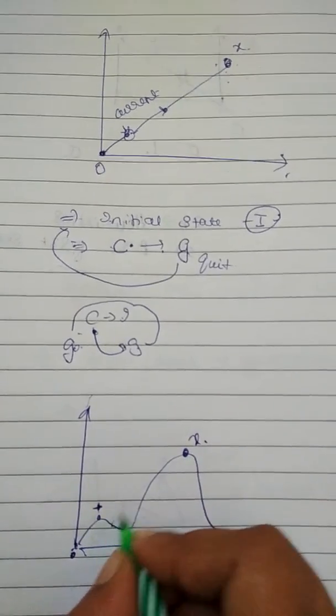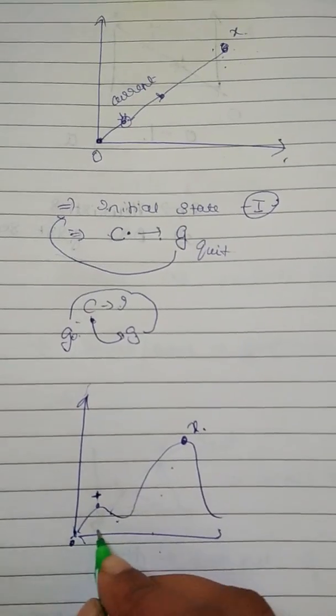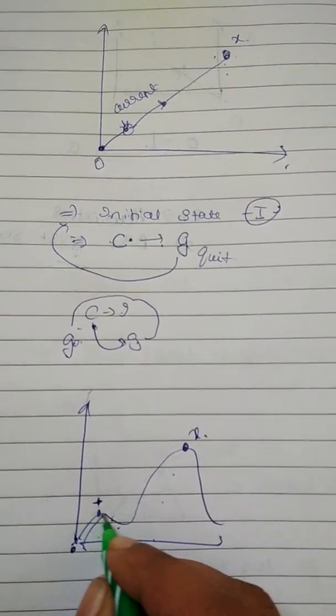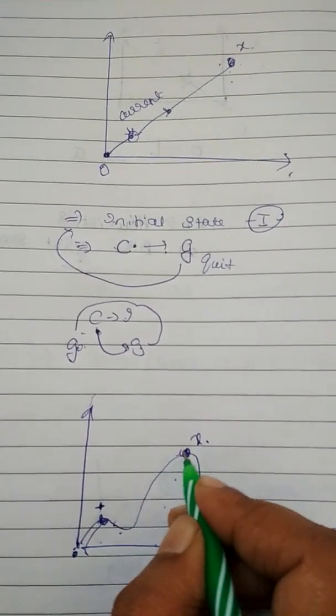The problem is here is the goal state. This problem is called as local maxima. It has already reached a maxima, so he will think it is a goal state, but the original goal state is here. This is a problem with hill climbing.